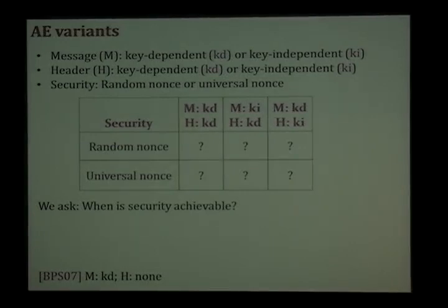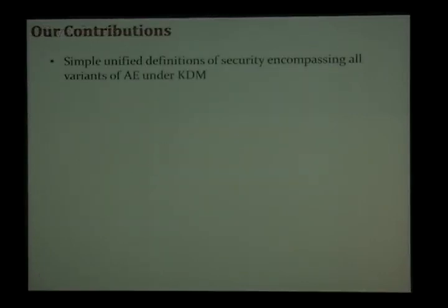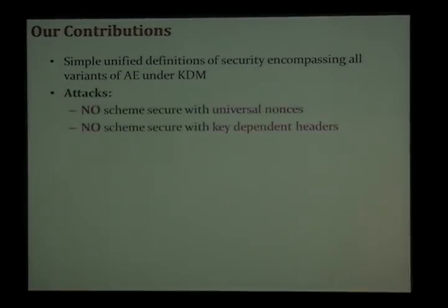So let's look at the other variants. The message can be key-dependent, the header can be key-dependent, or both can depend on the key, and the nonce could again be random or universal — leaving six variants. In this work, we ask whether it is possible to achieve KDM security in these settings. Our first contribution is a simple and unified way to deal with all these variants so we don't have to redo proofs and definitions separately. And we show two attacks.